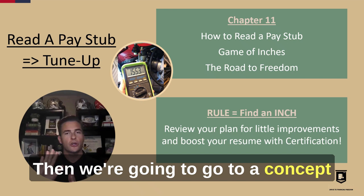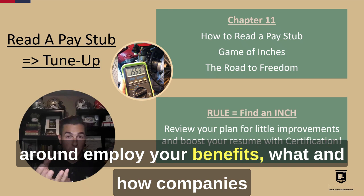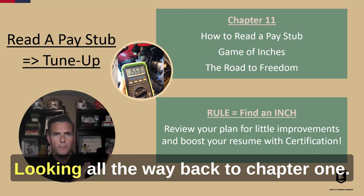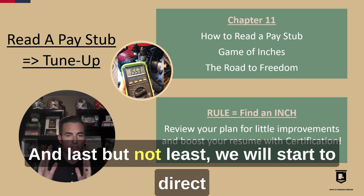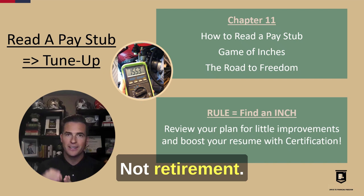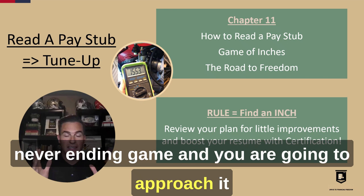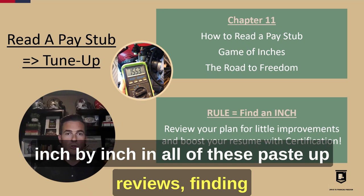Then we're going to go to a concept around employer benefits — what and how companies are utilizing those to attract and retain you. Looking all the way back to Chapter 1 and those goals we set: how do we make progression? How do we not get overwhelmed? We'll introduce this concept of a game of inches. And last but not least, we will start to direct the students down this road toward their financial freedom — not retirement, financial freedom. The rule and the action: money is a never-ending game, and you are going to approach it inch by inch through all of these pay stub reviews, finding ways to improve your system.